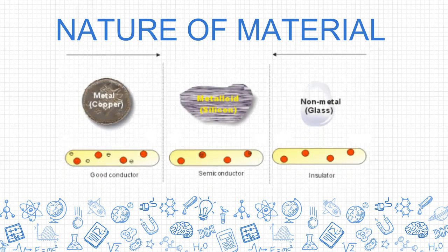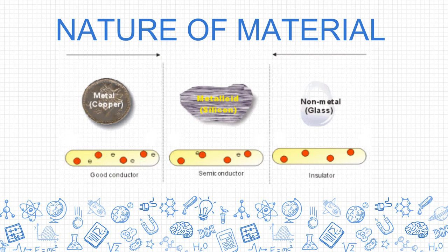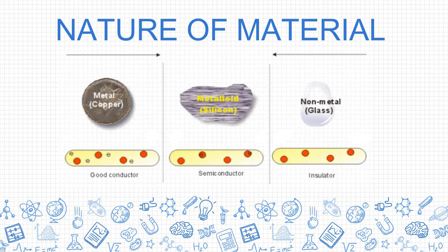There are three categories: good conductors, semiconductors, and insulators. Good conductors like copper have very low resistance, so electrons and current flow easily. Semiconductors like silicon have slightly more resistance, so fewer electrons flow. Insulators like glass have very high resistance, so electrons cannot flow at all.